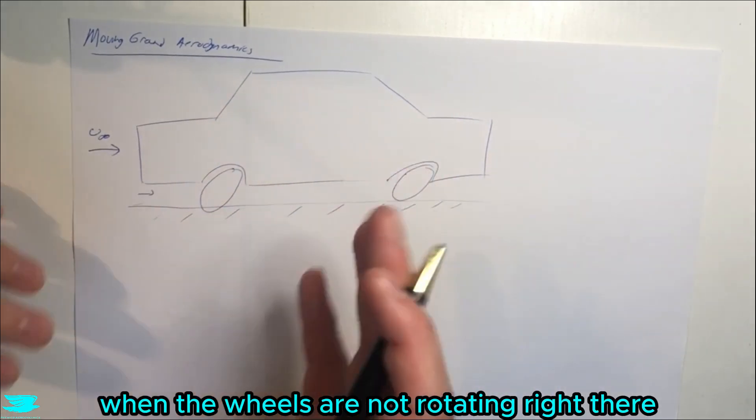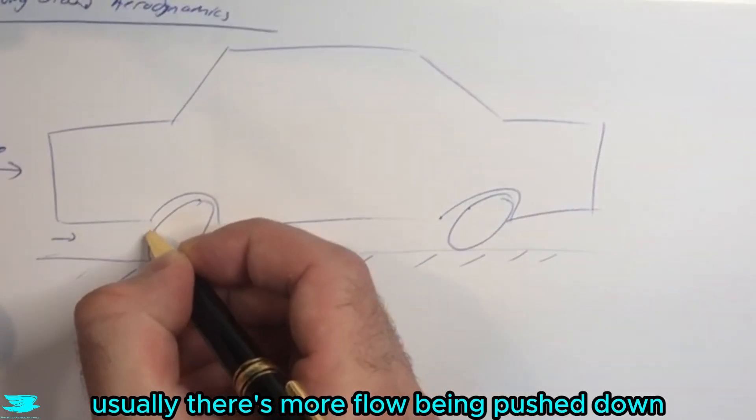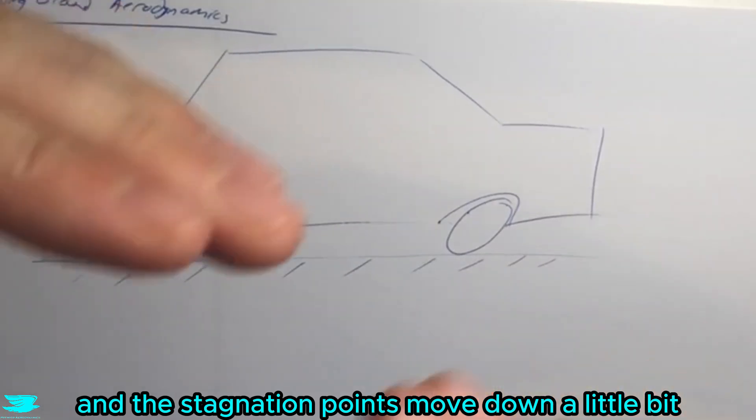First of all, when the wheels are not rotating, we get a very different flow physics. When the wheels are rotating, usually there's more flow being pushed down and the stagnation points move down a little bit.